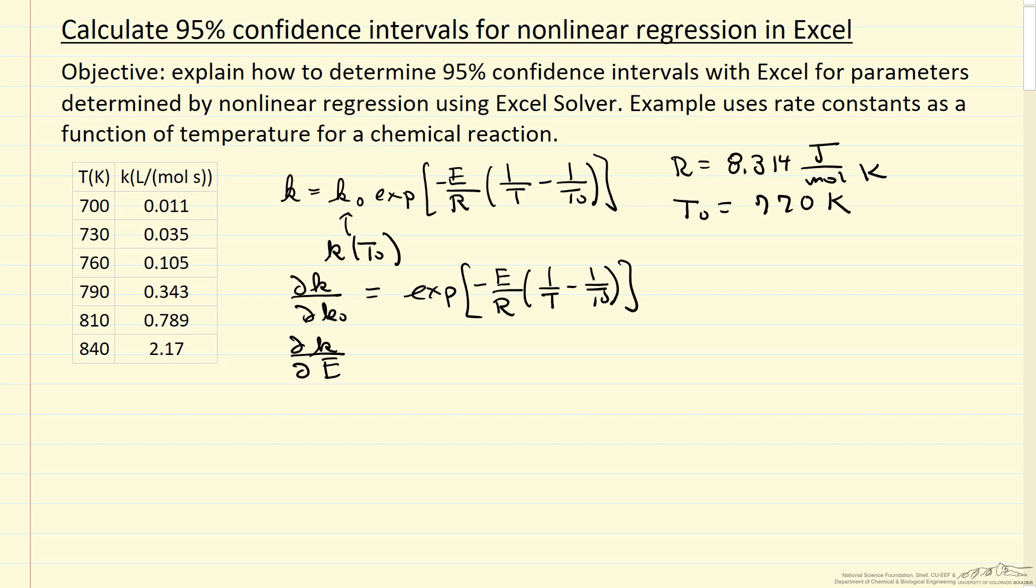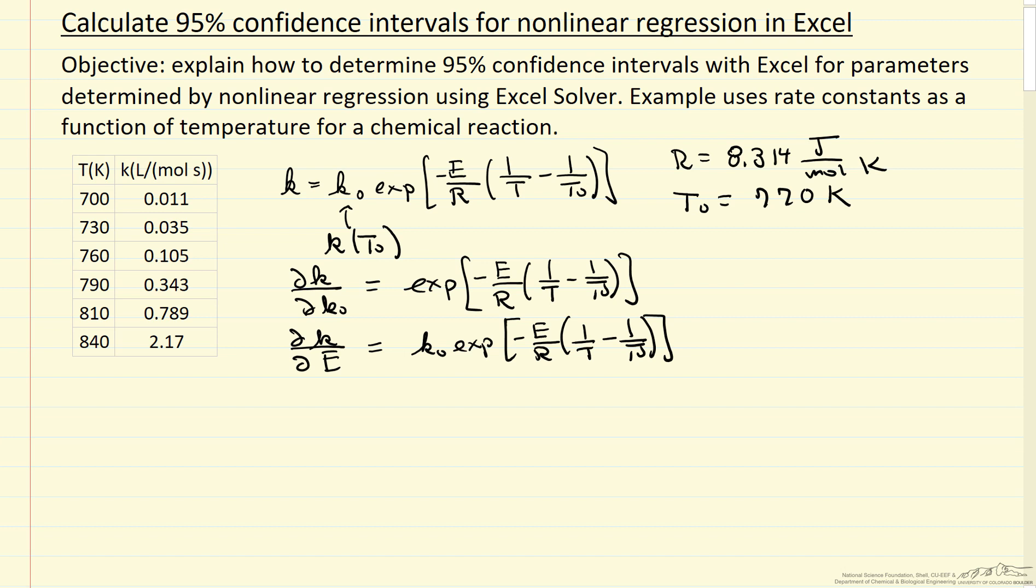And the other partial we're going to need is the partial of K with respect to E. We're taking partials with respect to the two parameters that we determined by nonlinear regression. We have an exponential, derivative of the exponential, and then we have the derivative of the term in the exponential with respect to E. And that term is then minus 1 over R, 1 over T, minus 1 over T0.